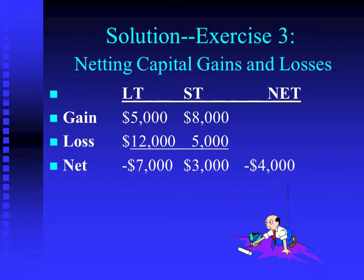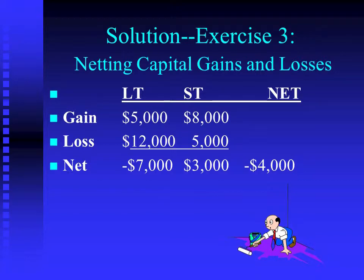That loss is also larger than our short-term gain. So when we net across our long and our shorts, we have a negative $4,000. This is where life is going to get sad, because it's very difficult to use your net capital losses — whether they're long or short doesn't make any difference. While they're willing to give us a preferential tax rate if we have a net long-term capital gain, they're not willing to give us any breaks at all if we have a capital loss.